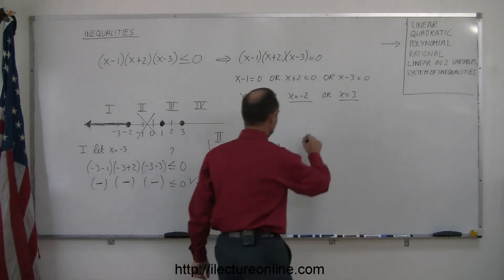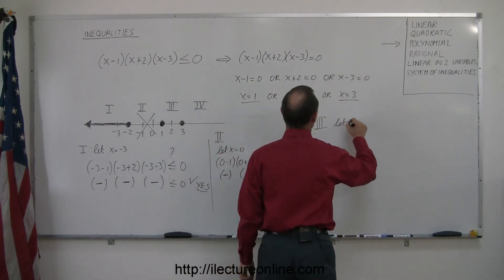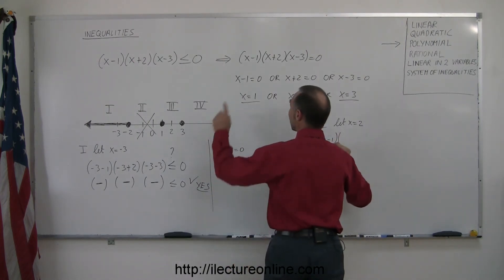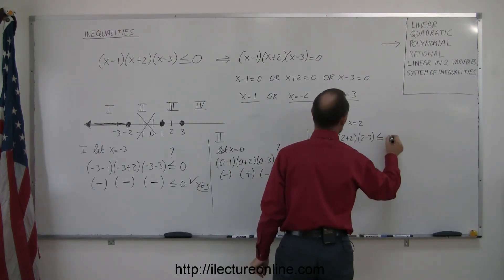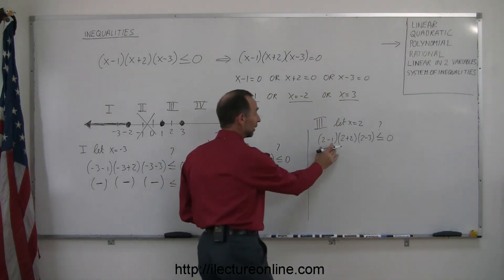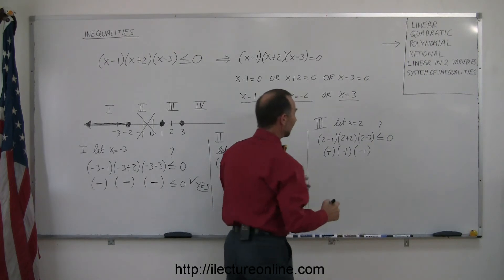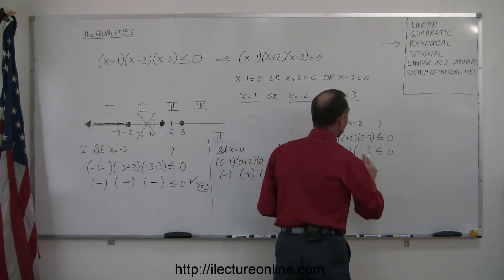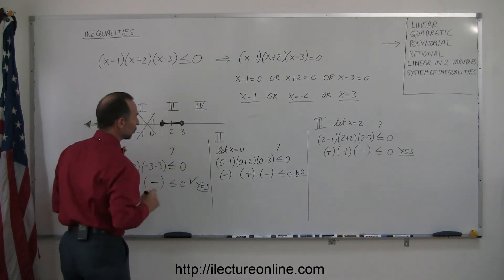Testing Region 3, we pick x equals 2. Plugging in: (2 minus 1)(2 plus 2)(2 minus 3) ≤ 0. The first factor is positive, the second is positive, and the third is negative. A positive times a positive times a negative gives a negative number, and a negative number is indeed less than 0. So yes, Region 3 satisfies the inequality — the region between 1 and 3 is included in the solution.